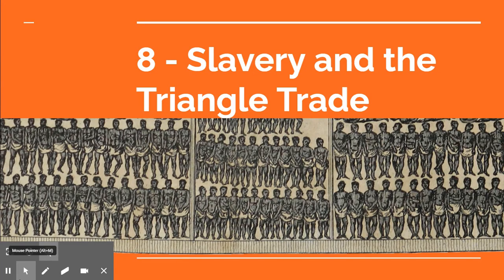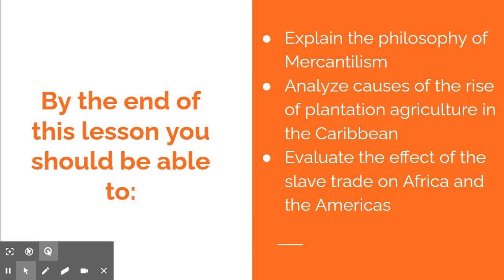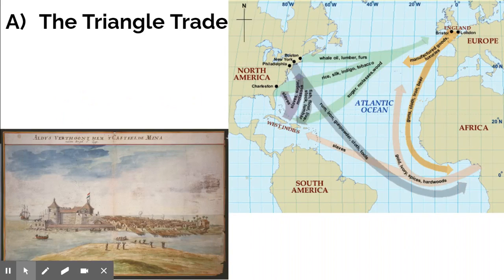Welcome to World History. Today we're going to discuss the unbelievably depressing phenomena of American slavery and the triangle trade. This is going to be really rough, so let's dive into it. The things you should be able to do at the end of this lesson are: explain the philosophy of mercantilism, analyze the causes and the rise of plantation agriculture in the Caribbean, and evaluate the effects of the slave trade on Africa and the Americas.